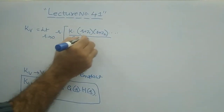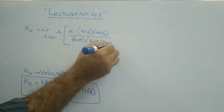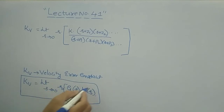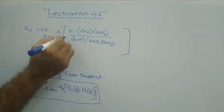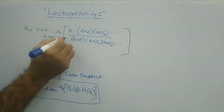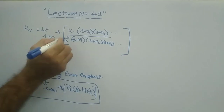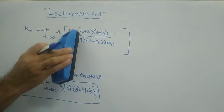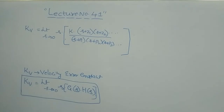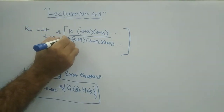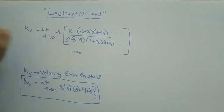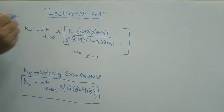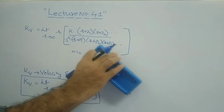For type 0, KV equals limit s tends to 0 of s times the constant K times (s+z1)(s+z2)... divided by (s+p1)(s+p2).... When we apply s equals 0, the s factor gives 0 times something equals 0. Therefore, for a type 0 system, the velocity error constant KV equals 0.